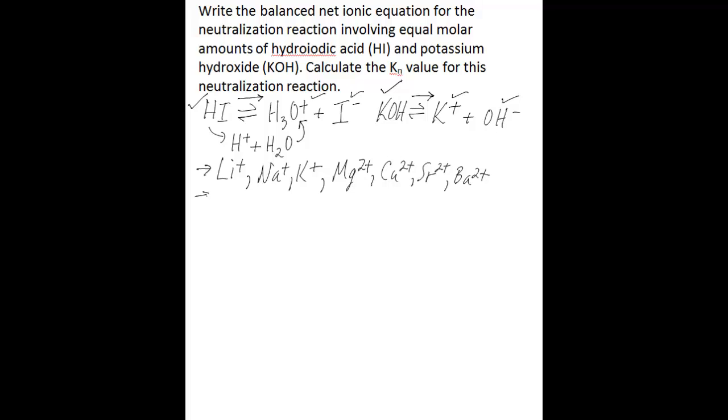You also need to consider the anions that come from strong monoprotic acid, because these also do not react appreciably with water. These anions are chloride, bromide, and iodide. These three come from the group 7A elements, or the halogens. And then we have two polyatomic anions, nitrate and chlorate, that will also not react appreciably with water.